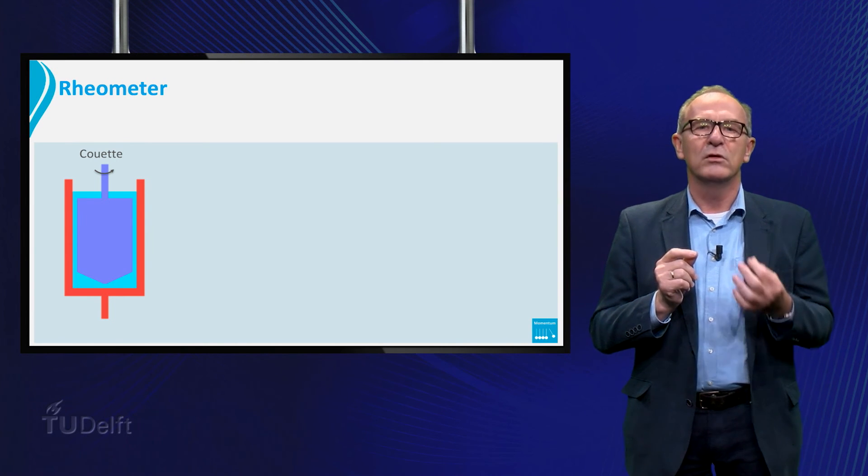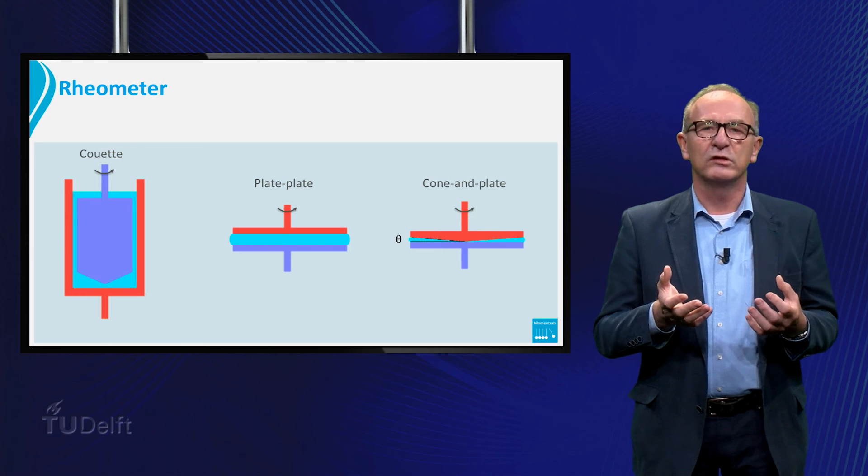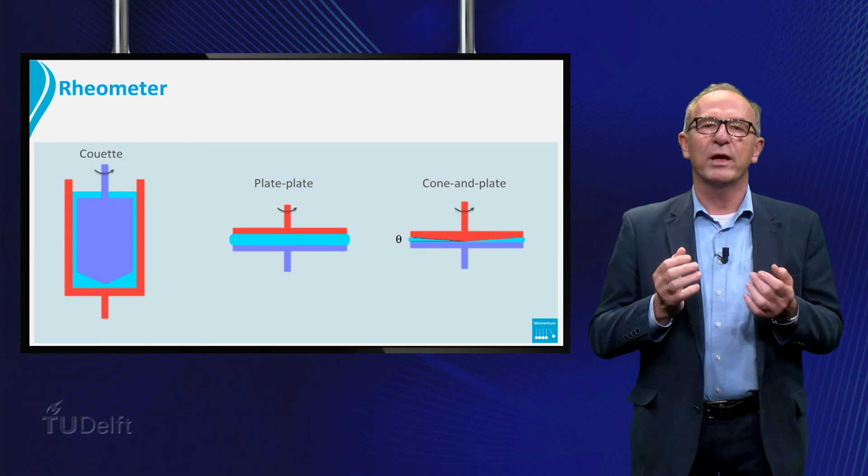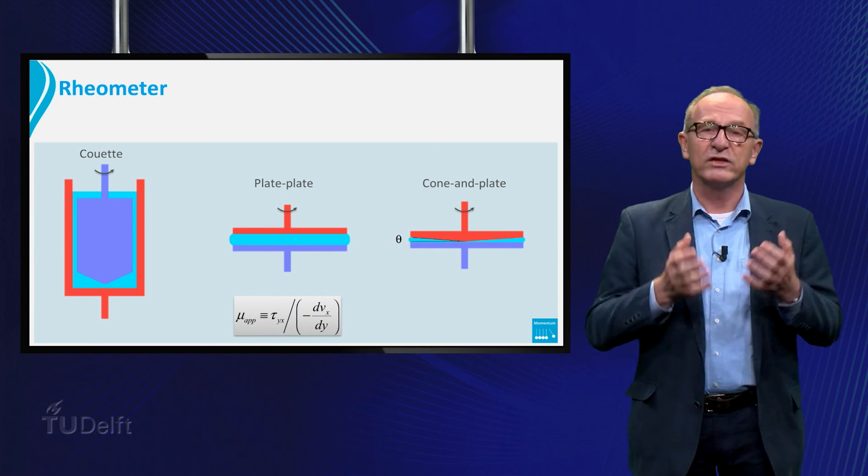like a Couette rheometer, or a plate-plate rheometer, or a cone-and-plate rheometer, where we can measure the different fluid properties, including the apparent viscosity, as a function of the shear stress and shear rate.